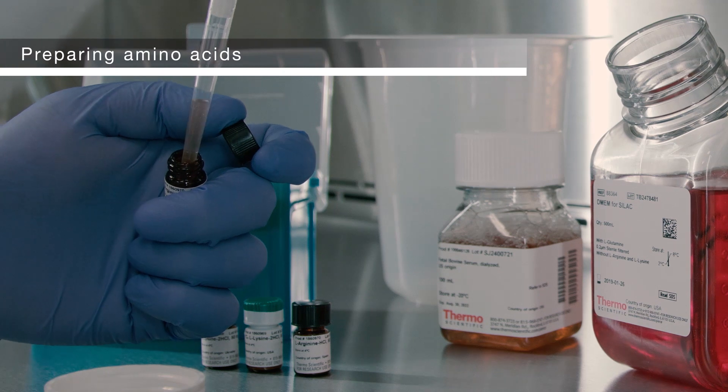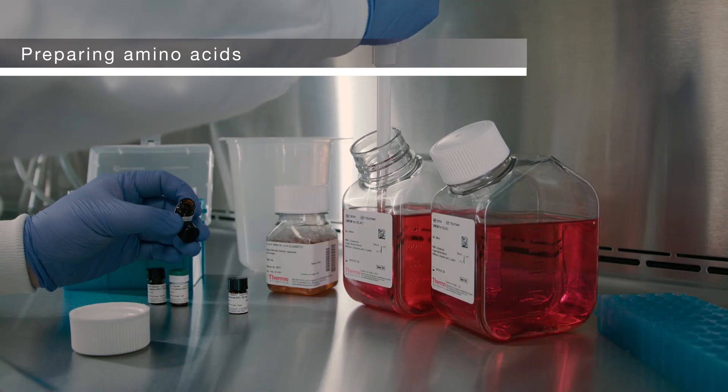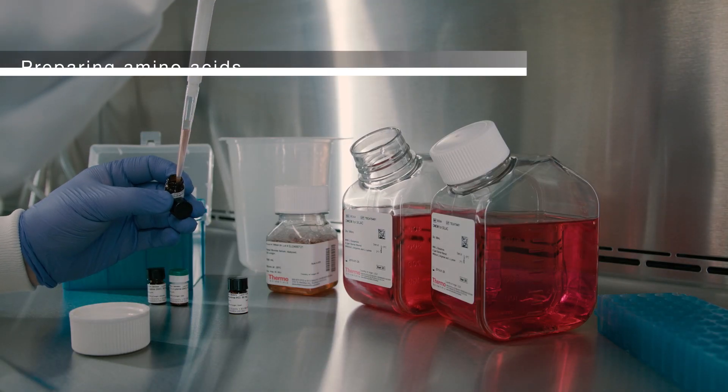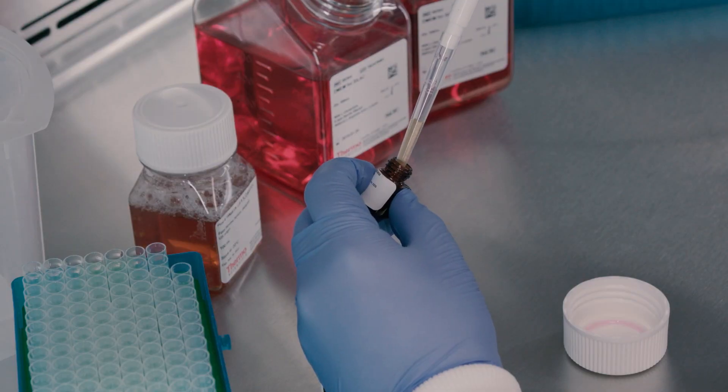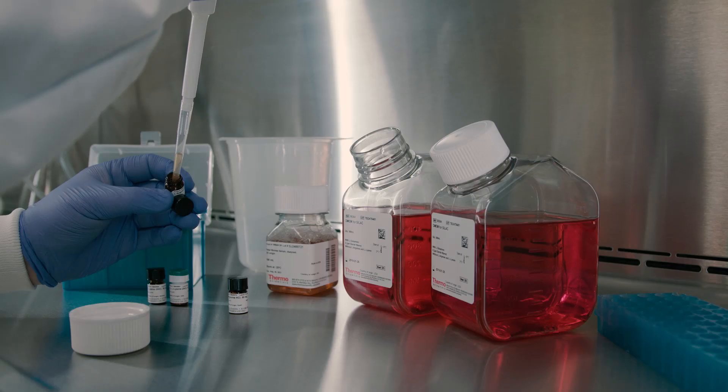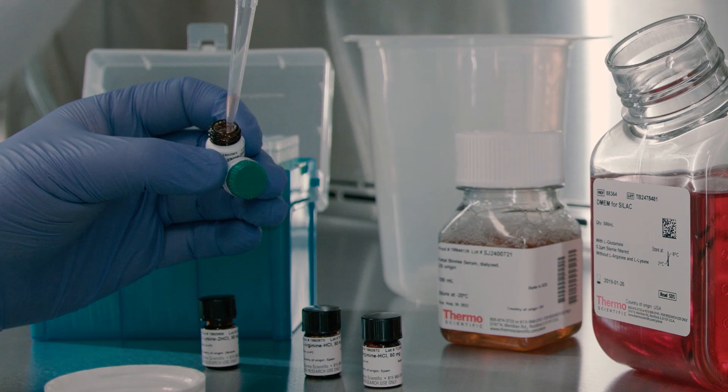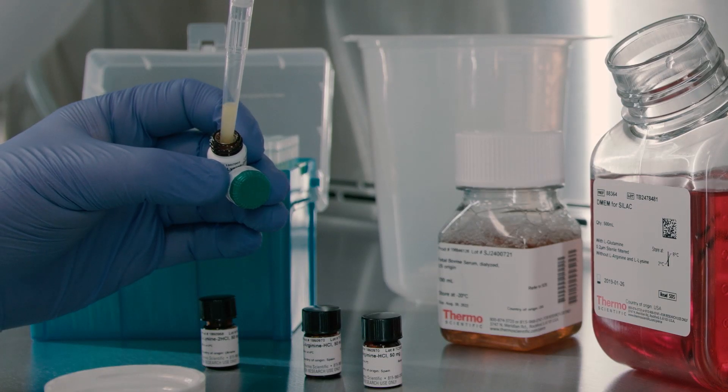The first step is to prepare the amino acids by dissolving 50 milligrams of each heavy or light amino acid in one milliliter of medium and mixing thoroughly. The color of the medium will change from red to yellow upon addition of the amino acid hydrochloride salts.